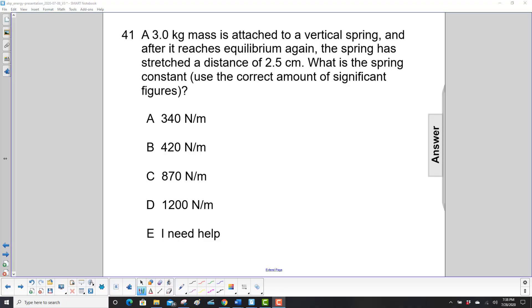A 3.0 kg mass is attached to a vertical spring and after it reaches equilibrium again, the spring has stretched a distance of 2.5 centimeters. What is the spring constant? Use the correct amount of significant figures.